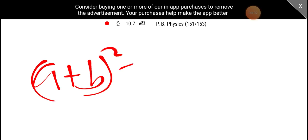A plus B all square is equal to A square plus 2AB plus B square. That's all.